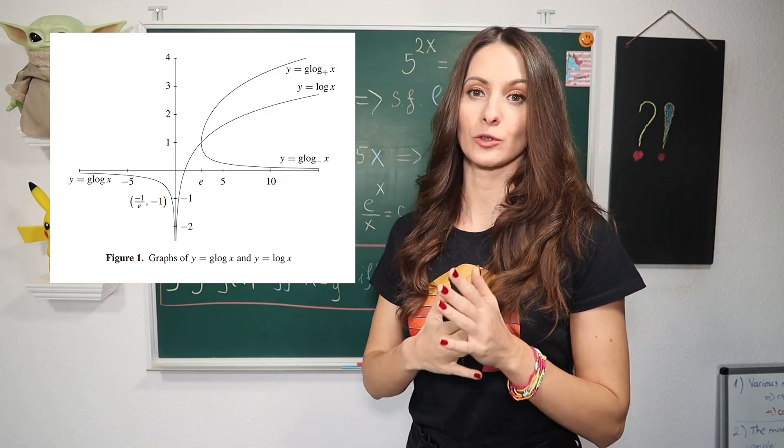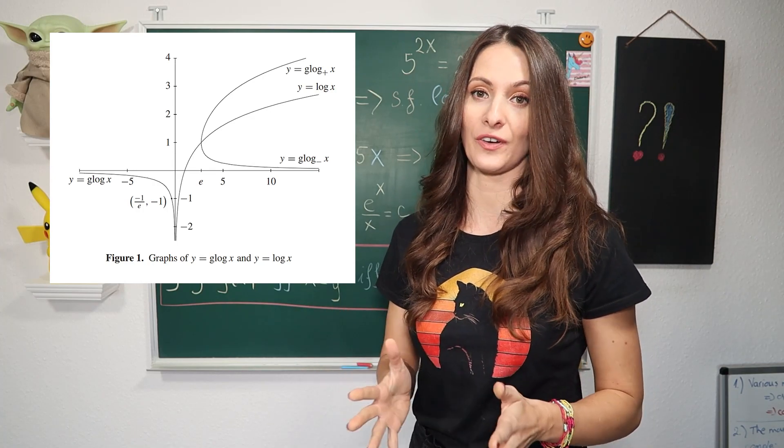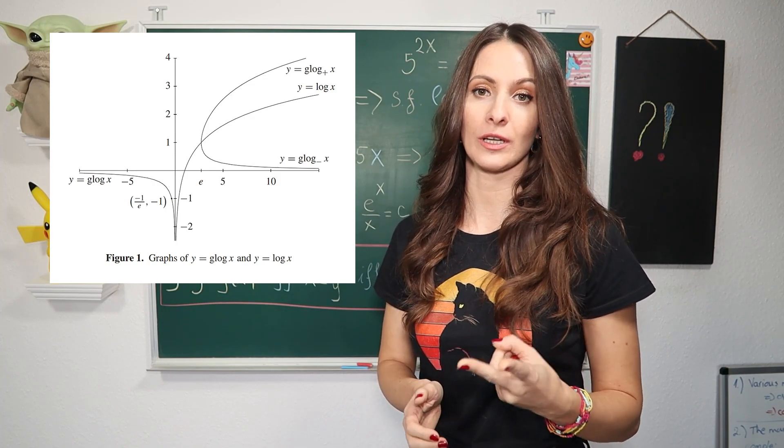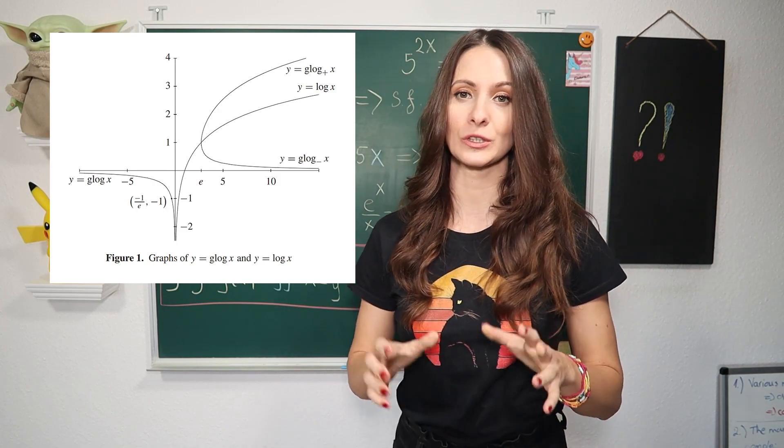For 0 ≤ x < e, the g-log function is not defined. And for x > e, the g-log function has two values. The larger we call glog(x) and the smaller we call glog₋(x).